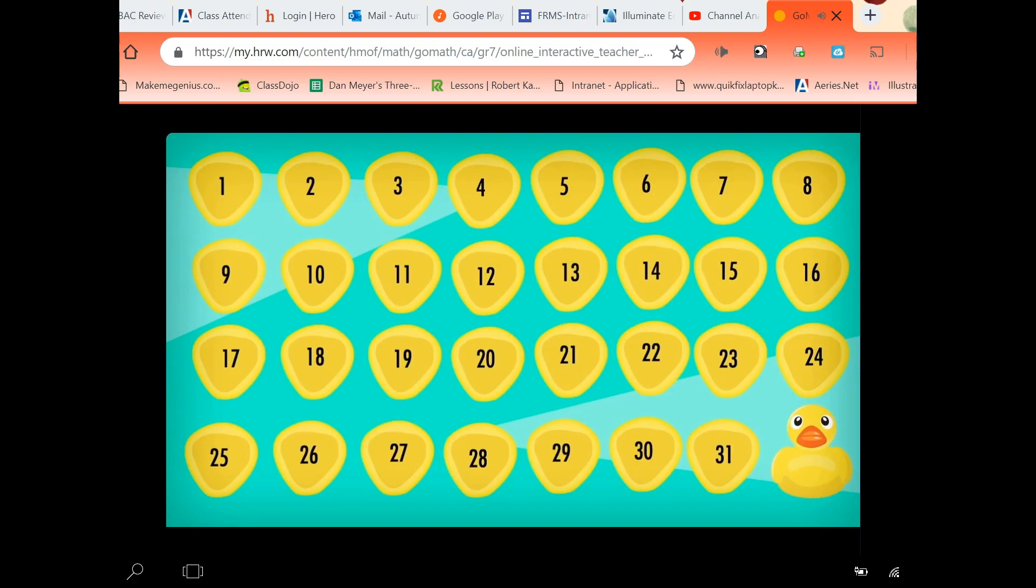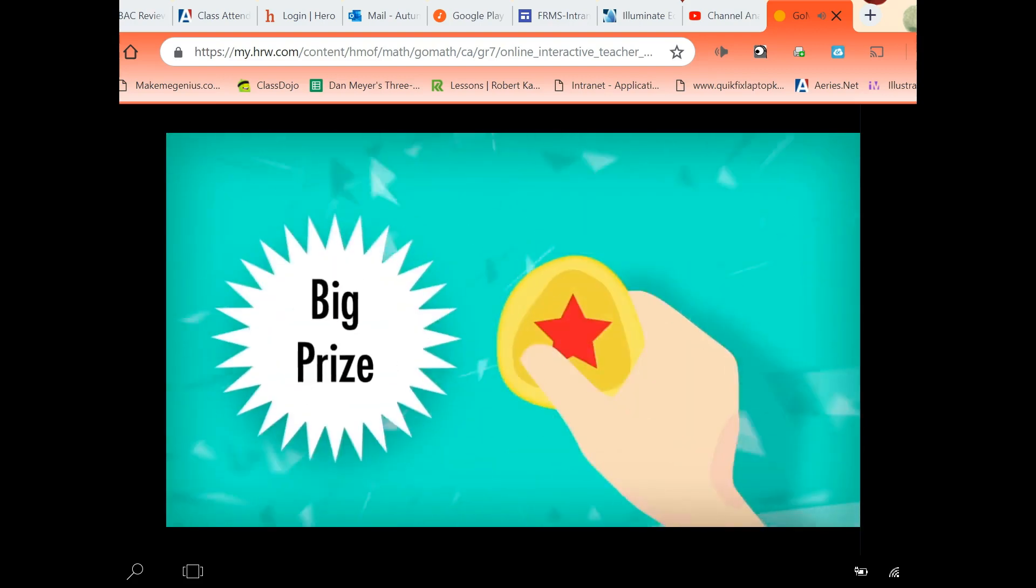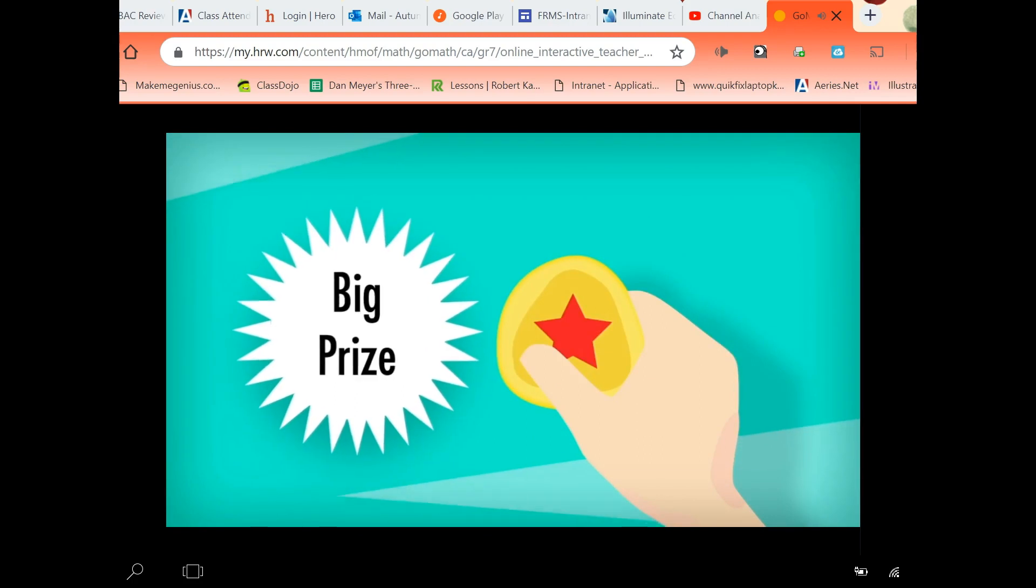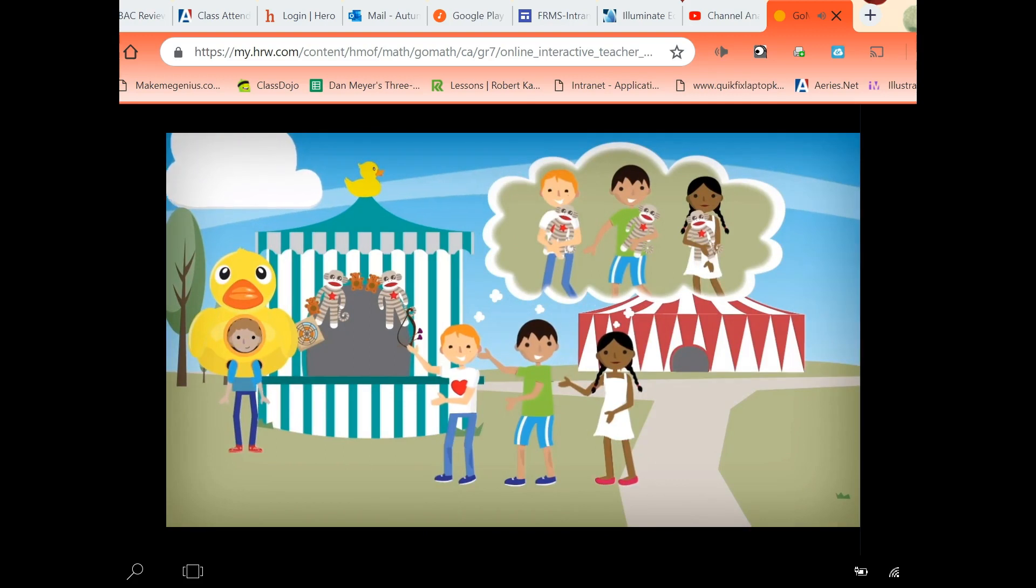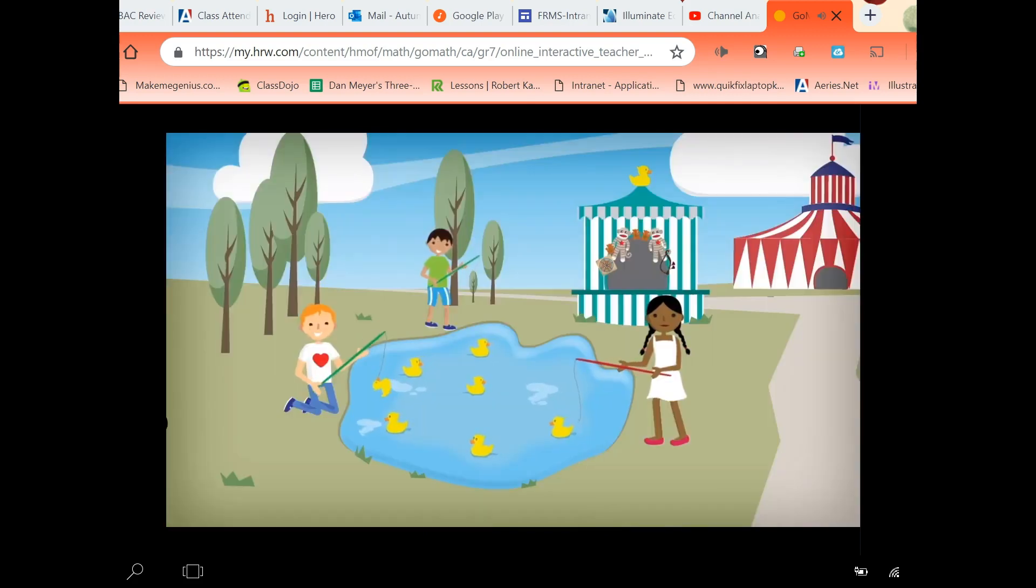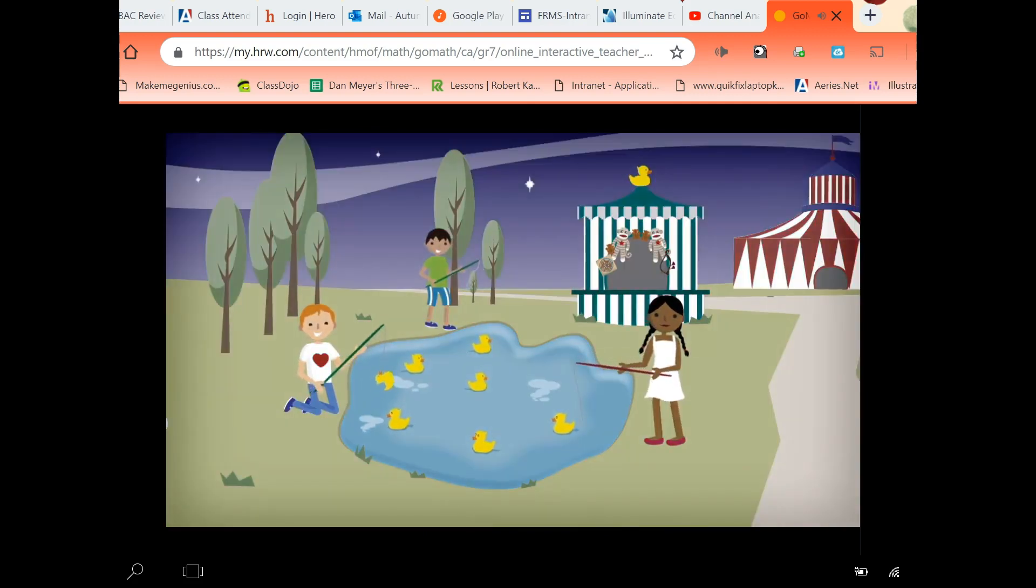However, if you're lucky enough to pick the 32nd duck, the one with the star, you win the big prize. Of course, all three of you have your eyes on the big prize. Wouldn't it be neat if you could each take home a giant bear? How many games would you expect to play for all three of you to win?